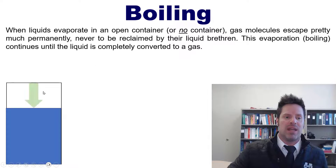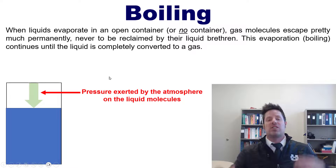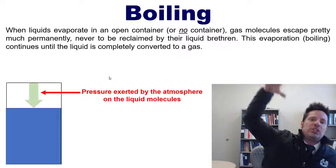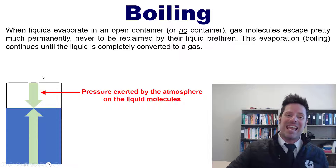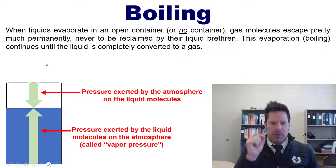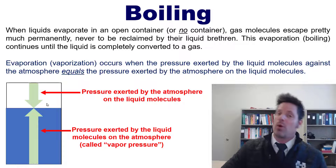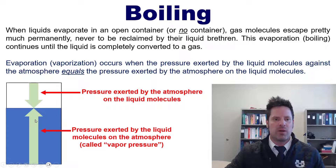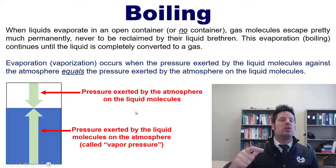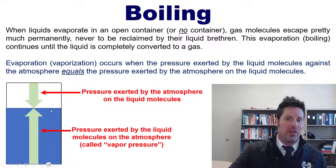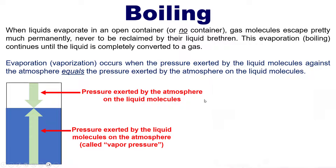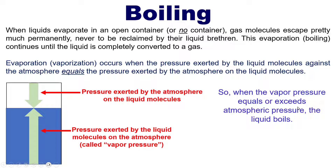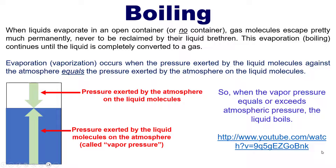All liquids experience some downward pressure upon them called atmospheric pressure, which is essentially the weight of all the molecules pushing down on that liquid. The liquid itself, however, will exert a pressure back up against the atmosphere called that liquid's vapor pressure. Evaporation — also called vaporization or boiling — occurs when the pressure exerted by the liquid molecules against the atmosphere equals or exceeds the atmospheric pressure pushing down. Once that happens, molecules start escaping, converting from liquid to gas, and hence boil. Boiling happens, definitionally, when vapor pressure equals or exceeds atmospheric pressure, as shown in a linked YouTube video.